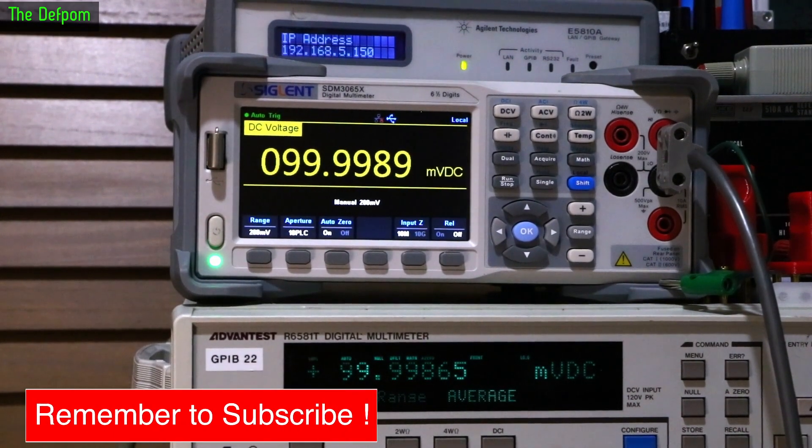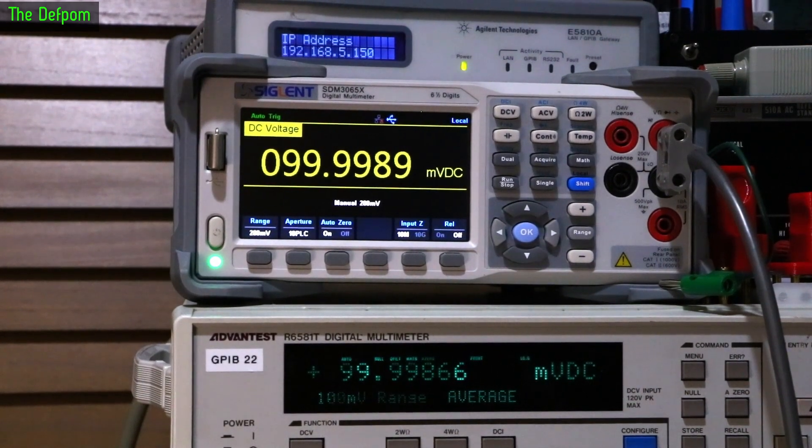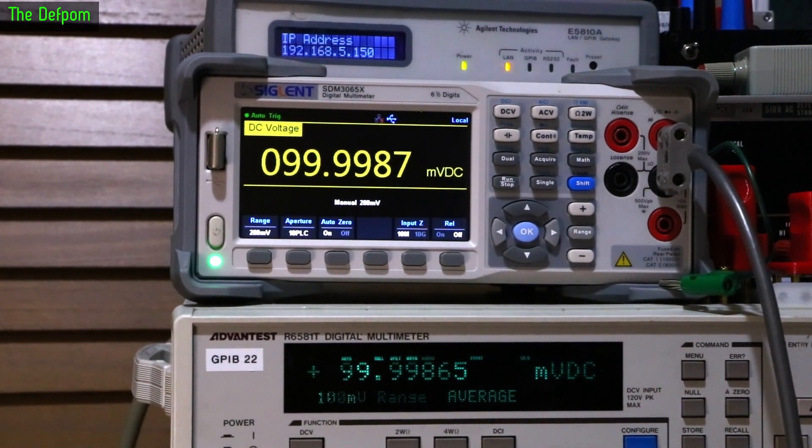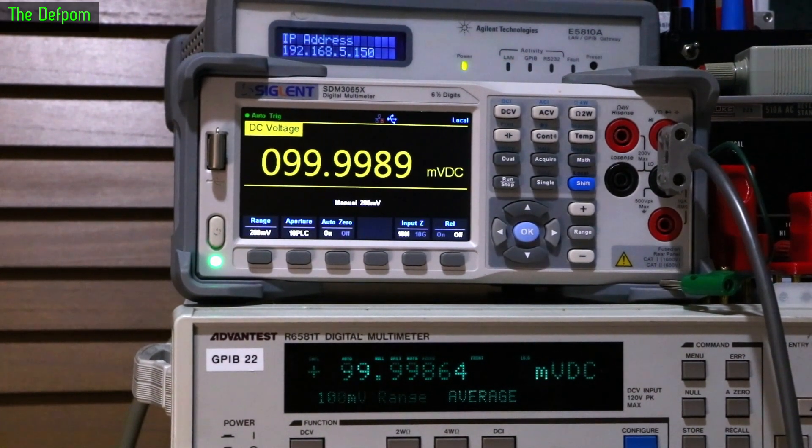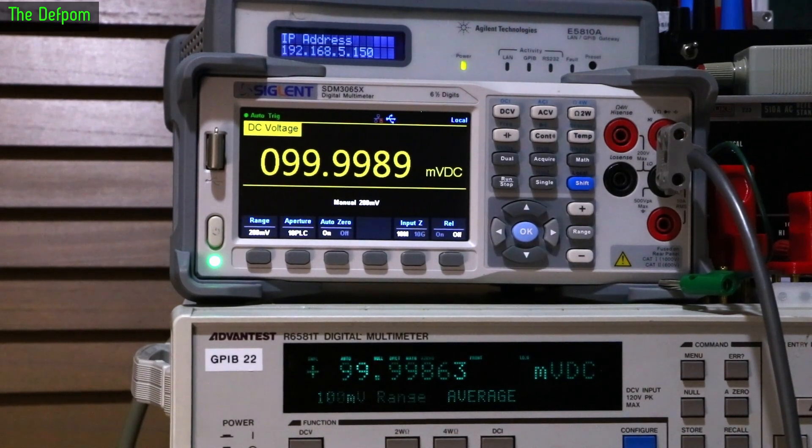I'll go through and do the 2 volt range and all the others without you watching, because you don't need to see me do the whole lot. But the idea is you've seen how it's done, and it's much more straightforward than the original spreadsheet method. So well done Siglent for doing that. I'm glad they listened to my suggestion and took it on board.